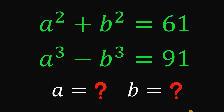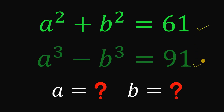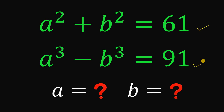For today's video, we will answer a math challenge given by one of our followers. The question goes like this: solve for the real values of a and b that satisfy the equations a squared plus b squared equals 61, and a cubed minus b cubed equals 91. You can pause this video if you want to give this problem a try.